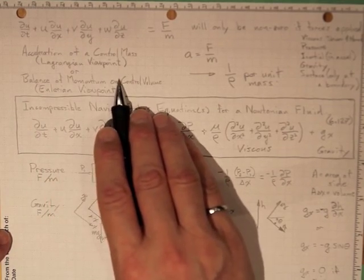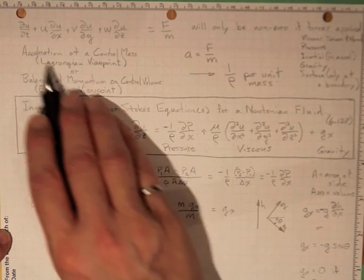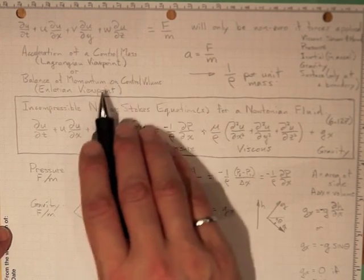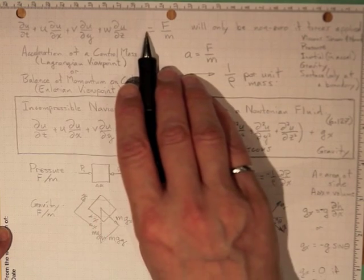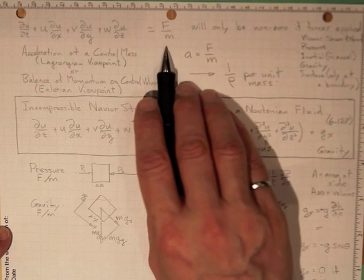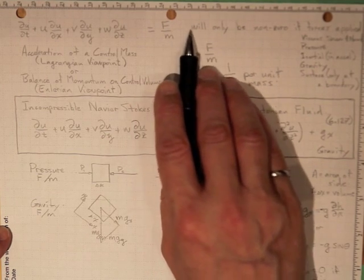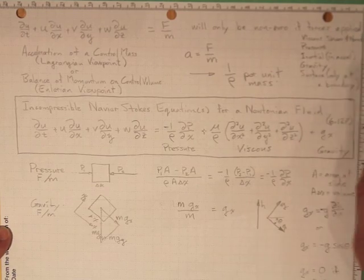It must be equal to either the change in momentum or the acceleration of the control mass. Either one will be equal to the force applied per unit mass, and it will be non-zero if forces are applied.